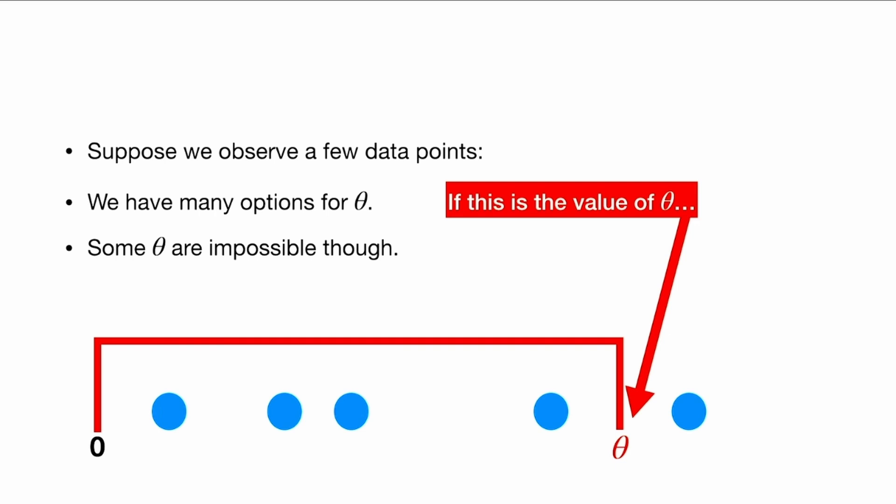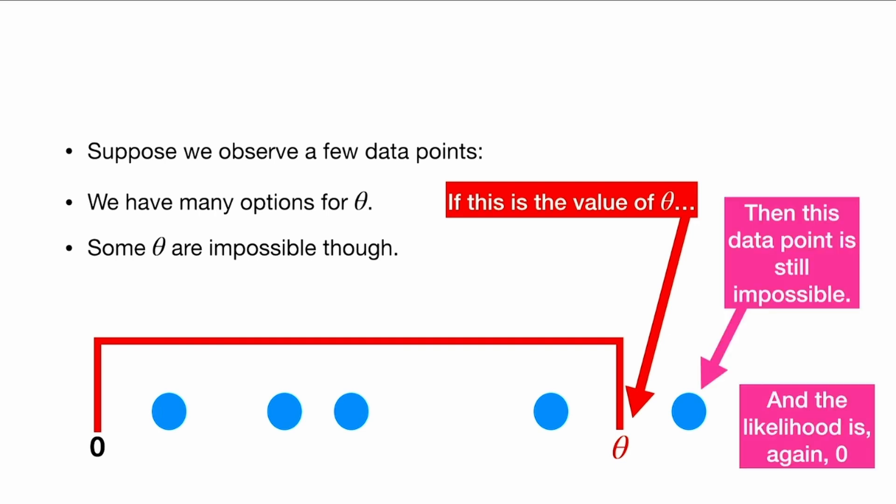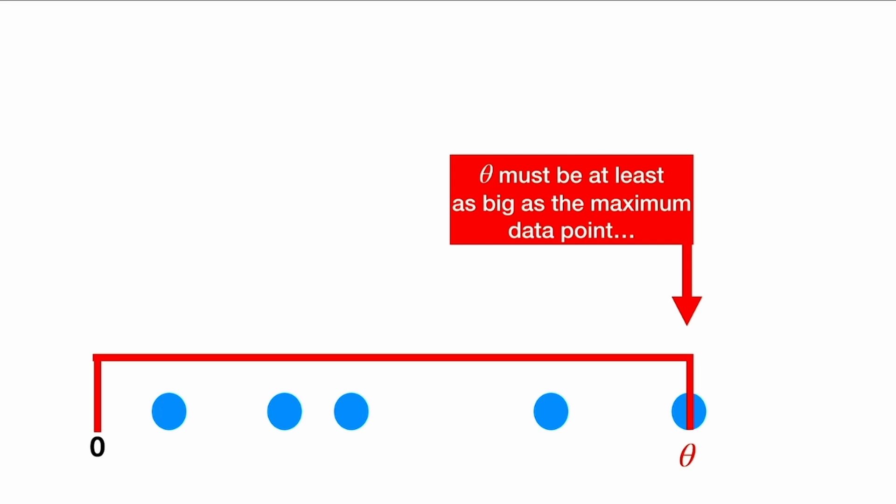Similarly, if this is the value of θ, then this data point is still impossible and again the likelihood is zero. So θ must be at least as big as the maximum data point.